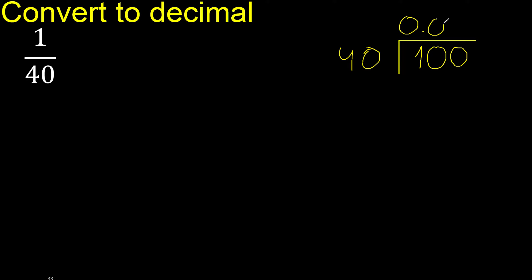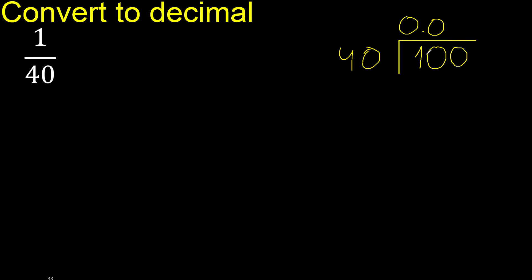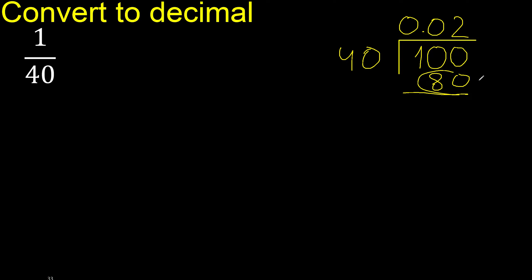Therefore complete, 0. 100 is not less than 40, therefore with 100: 40 multiplied by what number is nearest to 100? 40 multiplied by 3 is 120 — excessive. Multiplied by 2 is 80. Subtract: 100 minus 80 is 20. There is no number that goes down, therefore complete. Always complete with 0.